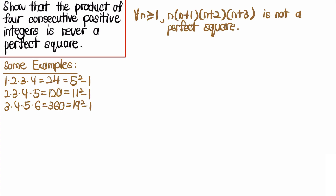For the first way, I will rewrite this expression by letting x = (2n+3)/2, which is also equal to n + 3/2 — essentially the middle number situated between n+1 and n+2.